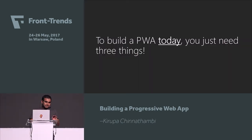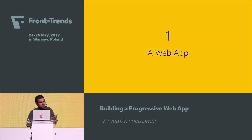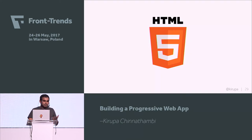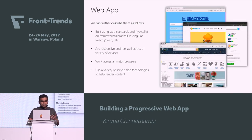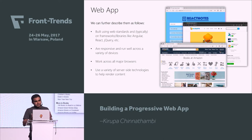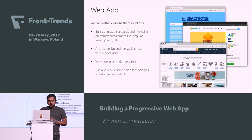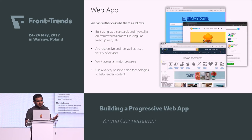To build a PWA in the strictest terminology, you just need three things. First, you need a web app — that seems obvious. We think of HTML, CSS, JavaScript. You can use your favorite frameworks like React, jQuery, Angular. They're responsive, they work across all major browsers, and they run on a variety of server-side technologies — whether you have PHP, static files, it doesn't matter.